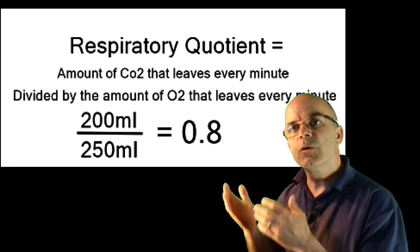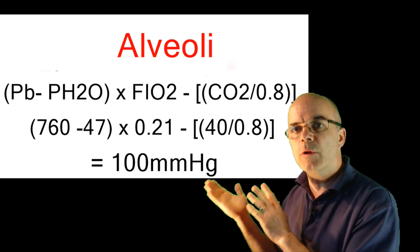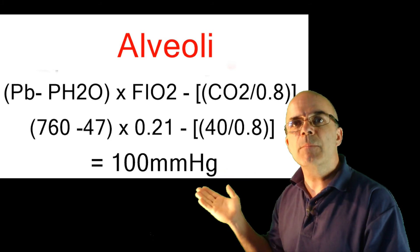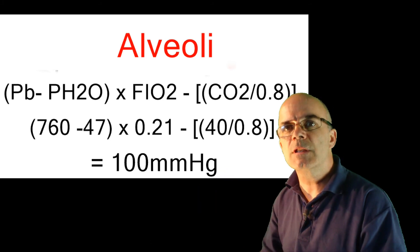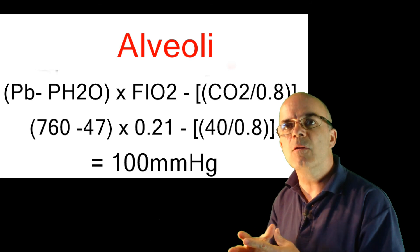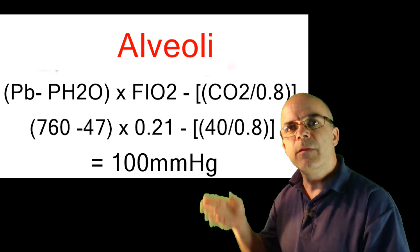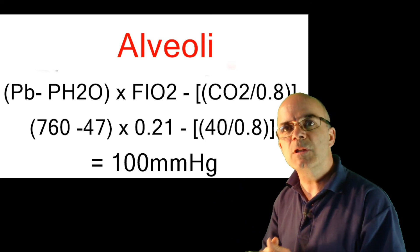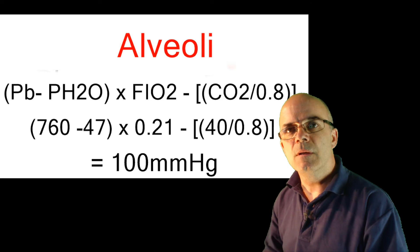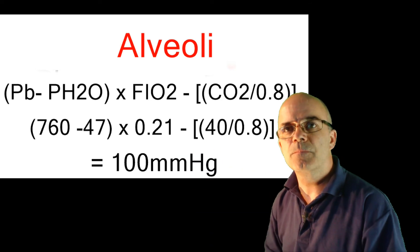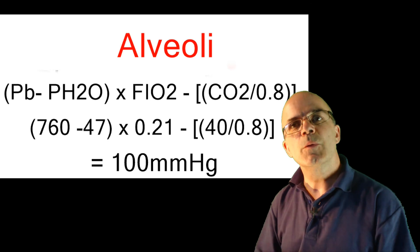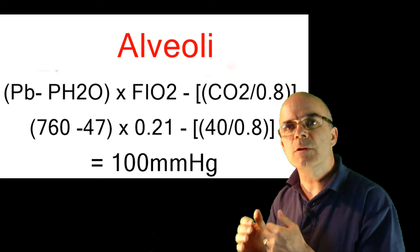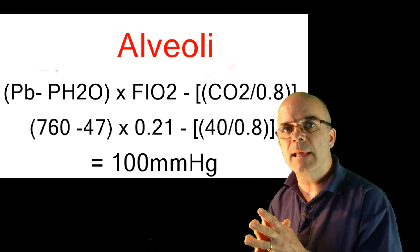So now, to work out the pressure in the alveoli, we need to take all the above into account. So first, we have the atmospheric pressure of 760 mmHg minus the pressure of water vapor. Then the percentage of oxygen minus the CO2 content divided by the respiratory quotient. We then multiply this by the first part. So the pressure of oxygen in the alveoli, or the PaO2, is 100 mmHg. Note the capital A here.